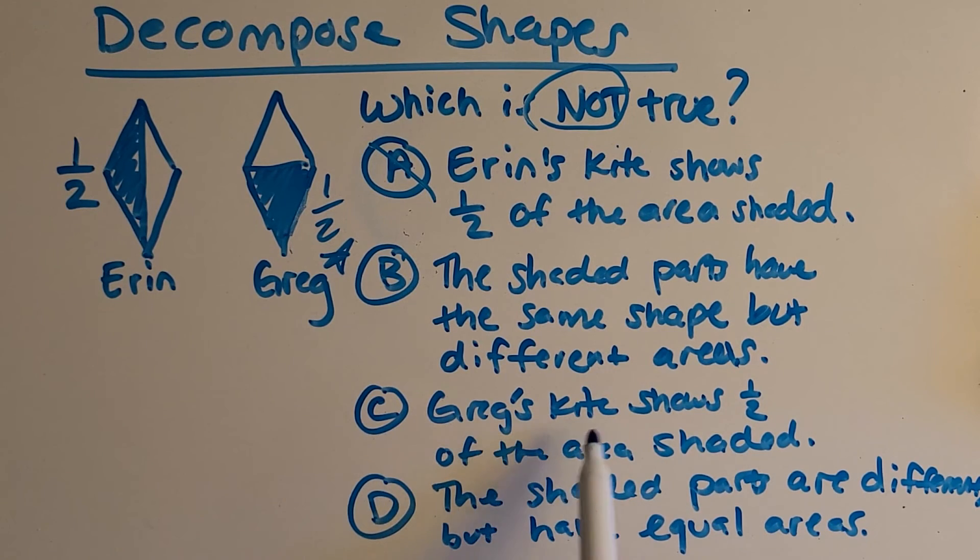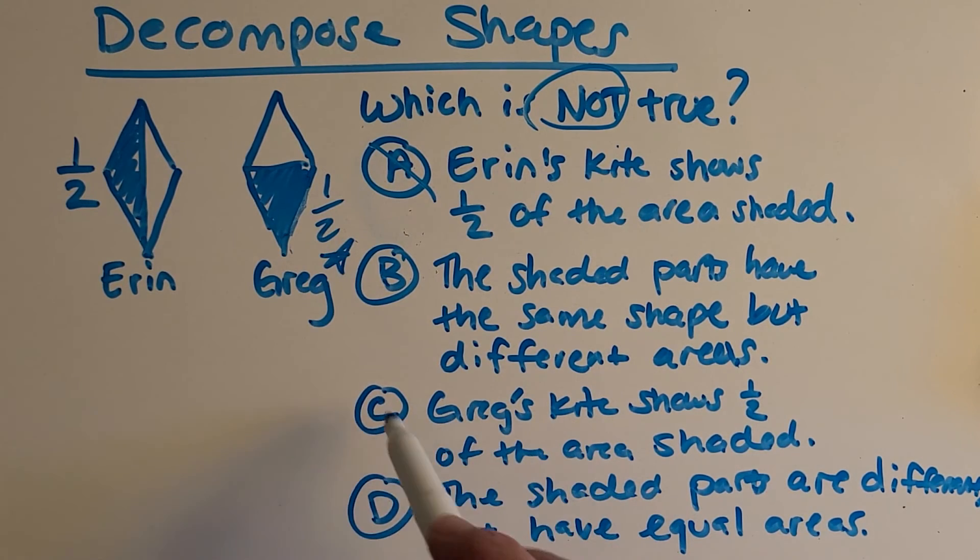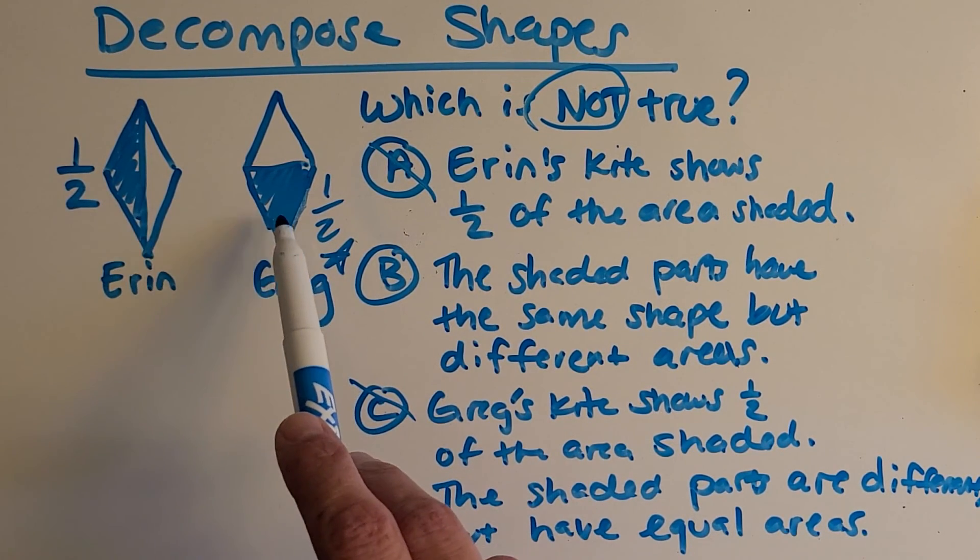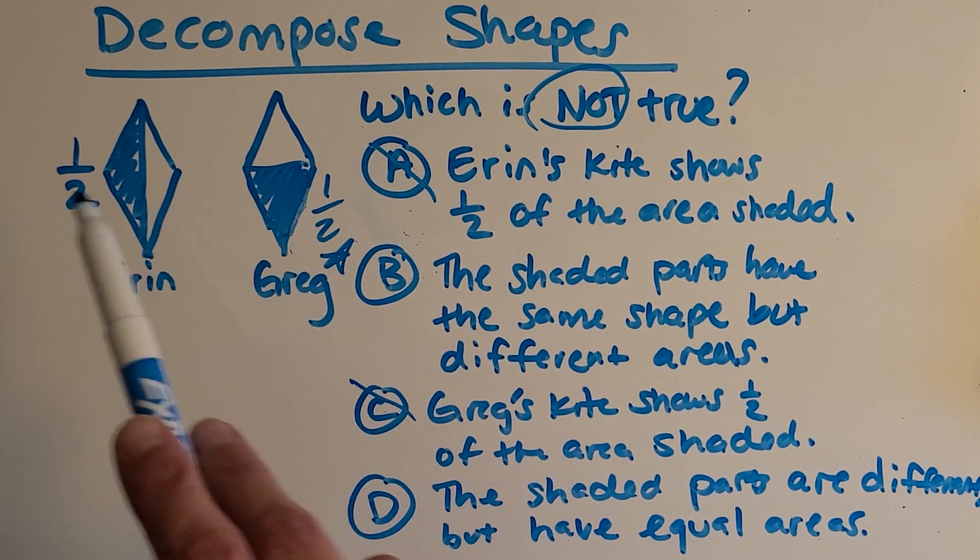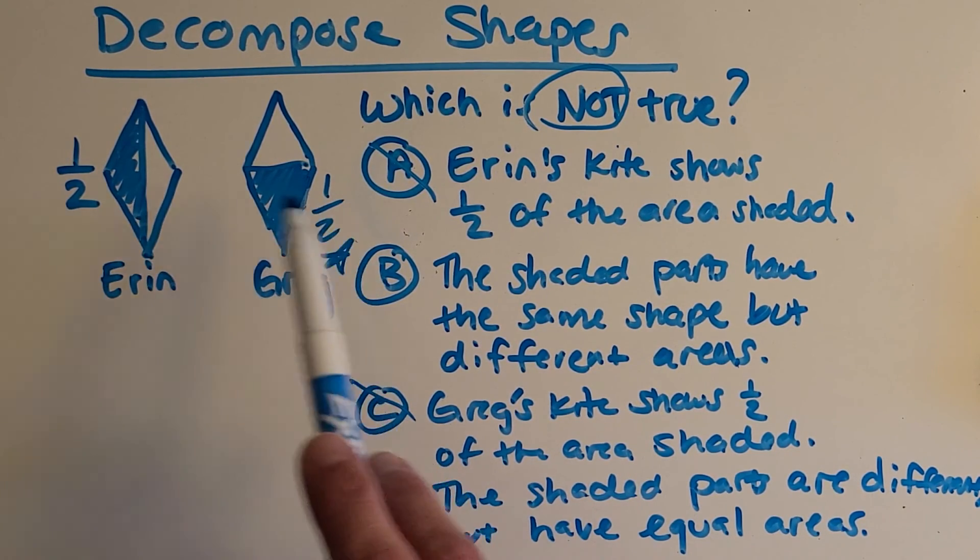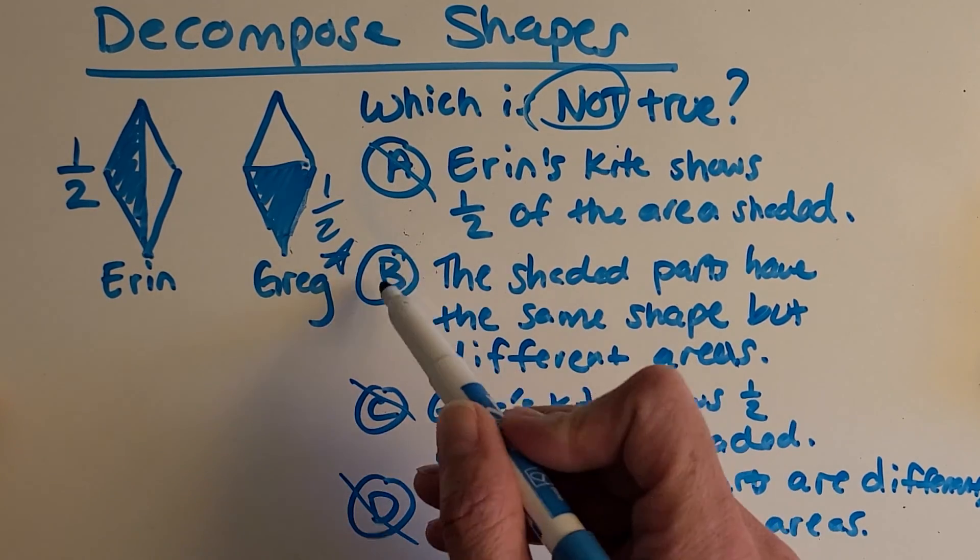C says Greg's kite shows one half of the area shaded. Oh, we just discovered that. Yes, it does. So it can't be C. And then D says the shaded parts are different, but have equal areas. So do the parts look different? Yes, they look different. But is it the same area, the same amount of the rhombus? Yes. So we can't choose that one. It must be B. Great job.